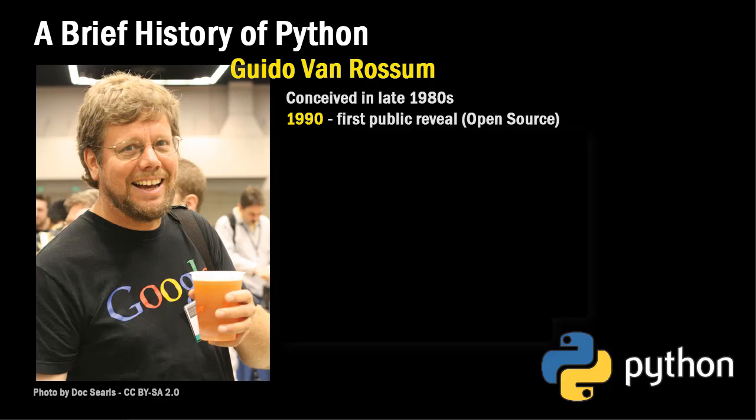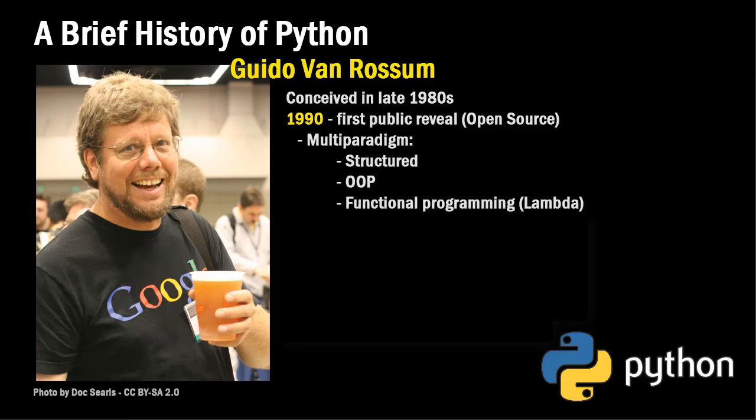His goals in developing this language were to make it multi-paradigm. It was both a structured language as well as an object-oriented programming language and also supported functional programming. Functional programs are based on lambda calculus. The idea in functional programming is that functions or methods can be used as arguments and can return functions as a result.